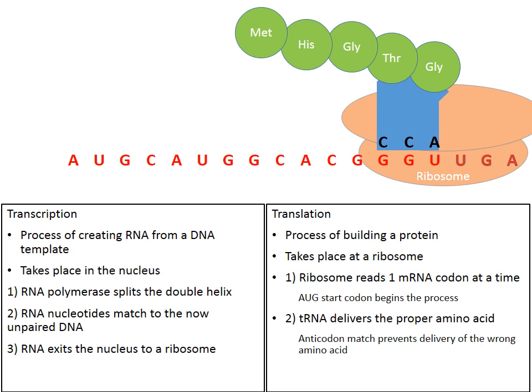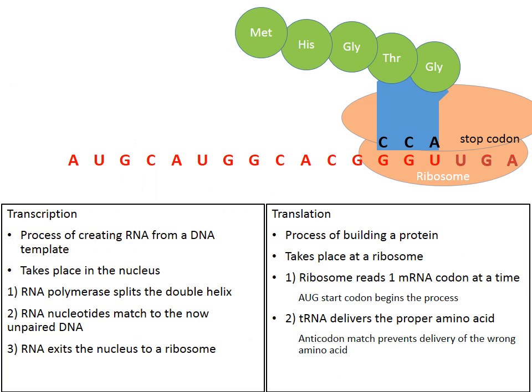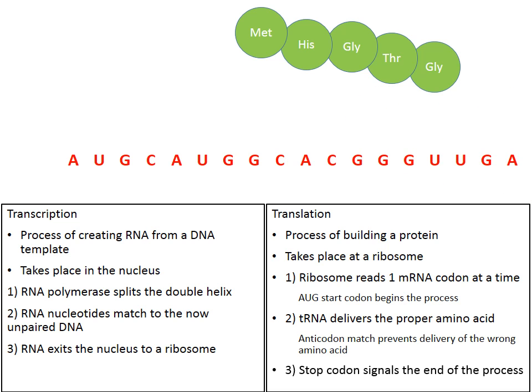The ribosome moves down to the next codon. UGA is the next codon. We find UGA on the chart — it's a stop codon, a sequence that will stop this process. It basically tells the ribosome the job is finished. Once the stop codon is encountered, the tRNA detaches, the ribosome breaks apart into two smaller subunits, and what you're left with is a chain of amino acids. That's exactly what a protein is — a chain of amino acids created by the ribosome through a process called translation.